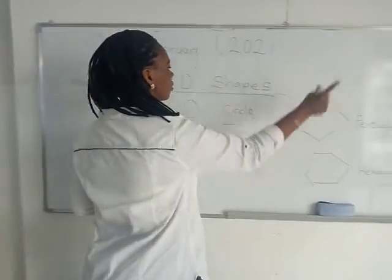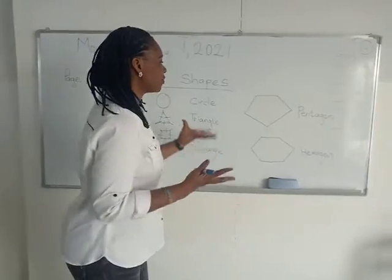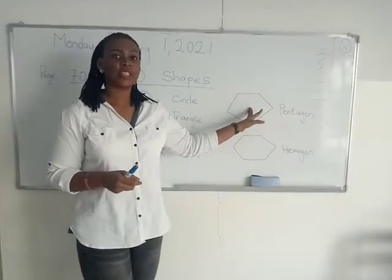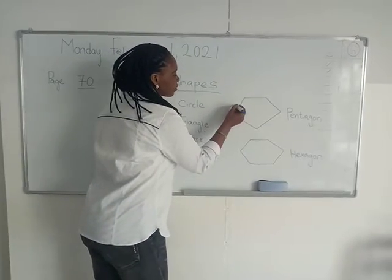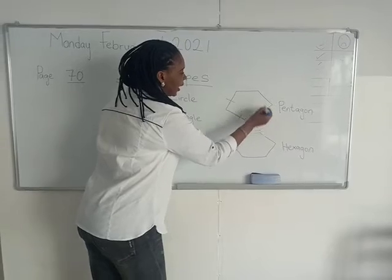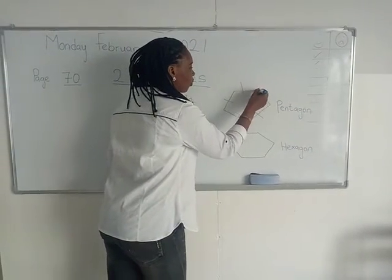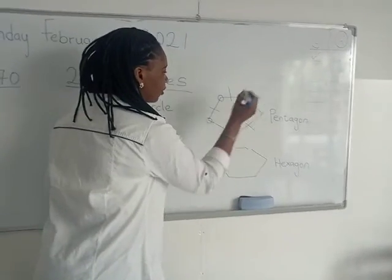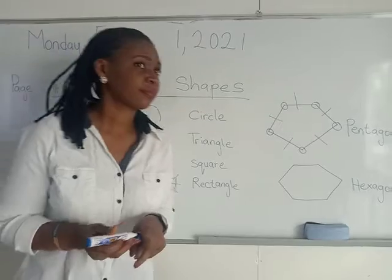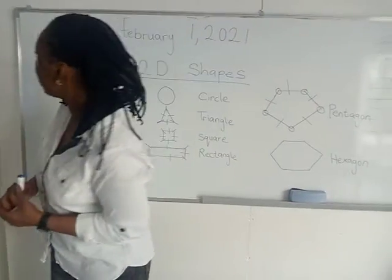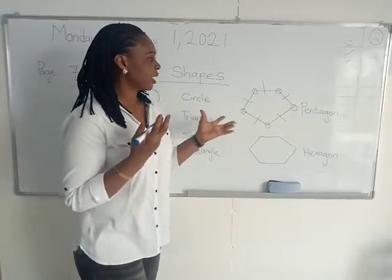Then we move to this shape — pentagon, everyone say pentagon. You might not be quite familiar with these shapes. A pentagon is a shape that has five sides and five corners. These are the five sides: one, two, three, four, five. Look around your house and try to find an object that has the shape of a pentagon.